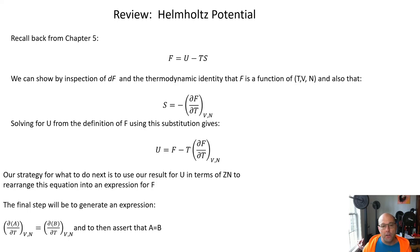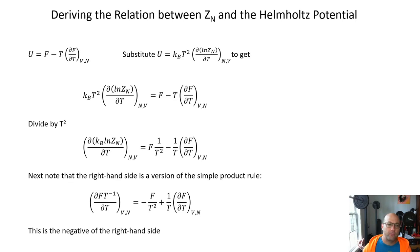And so the strategy is going to be to sub in for U in terms of as a function of Z and we're going to generate by a couple manipulations an expression that has a partial of something call it A with respect to T at V and N is equal to partial of something else call it B with respect to T at V and N. And if this is true we're going to claim that A is equal to B. So that's our plan for solving for the relationship between F and Z.